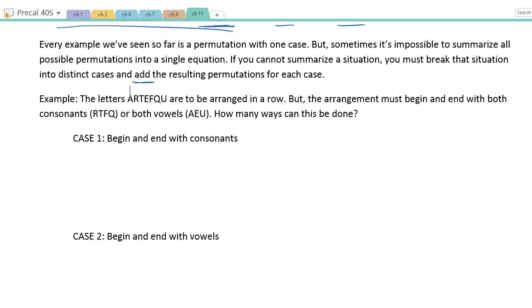So here's our first example. We have these letters, let me count them. There's seven letters all together. They're to be arranged in a row, but the arrangement must begin and end with both consonants or both vowels. So we have four consonants and three vowels.